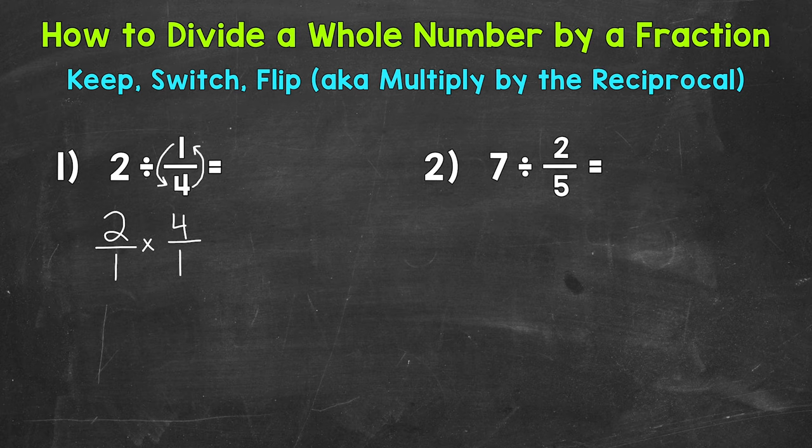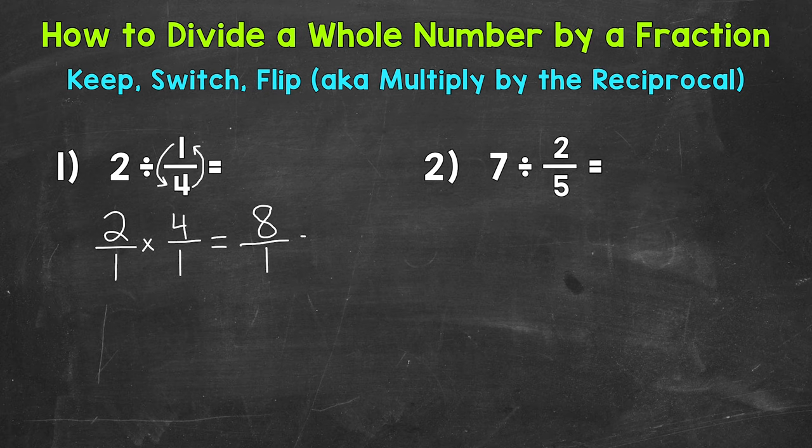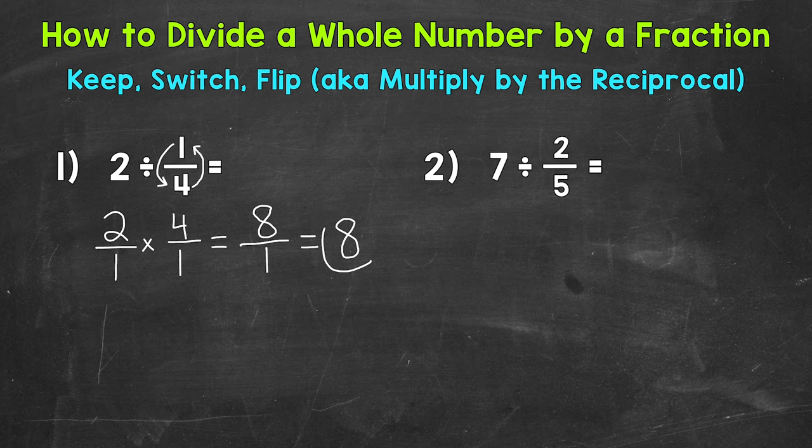Once we get to this point, we have a multiplying fractions problem, which we just multiply straight across when we multiply fractions. So two times four is eight and one times one is one. So we get to the answer of eight over one, which is an improper fraction. So we do not want to leave it like that. This is going to be eight. Our final answer is eight. Two divided by one fourth equals eight.